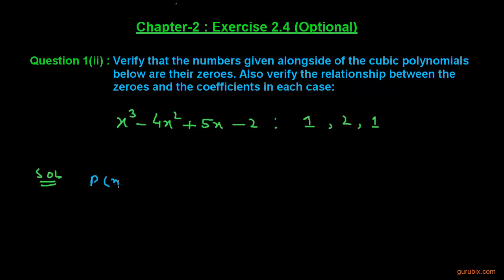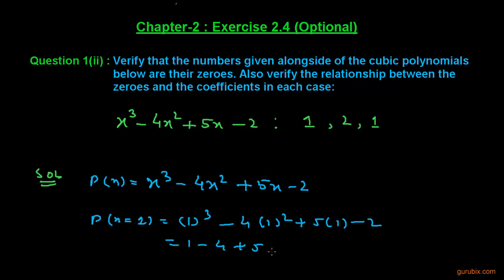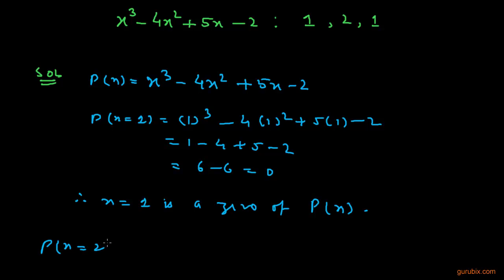First of all, we shall collect the given polynomial and denote it by p(x). So p(x) equals x³ minus 4x² plus 5x minus 2. We shall check it for x equals 1: we get 1³ minus 4 into 1² plus 5 into 1 minus 2, which gives 1 minus 4 plus 5 minus 2, that is 6 minus 6, equals 0. Therefore x equals 1 is a zero of the given polynomial p(x).